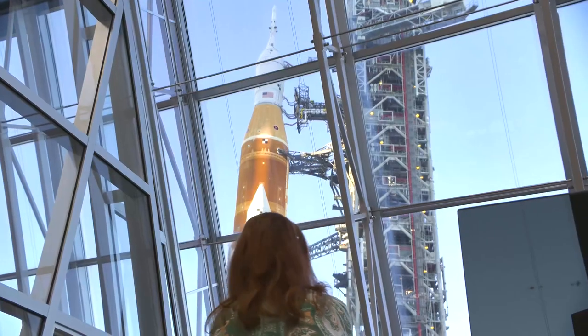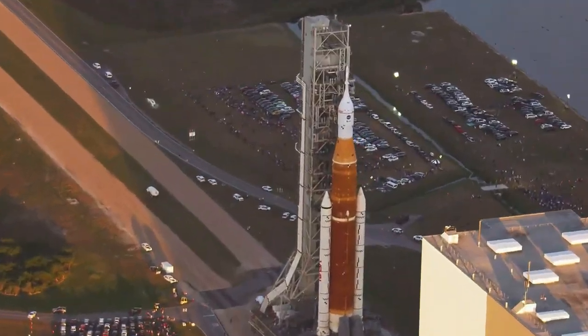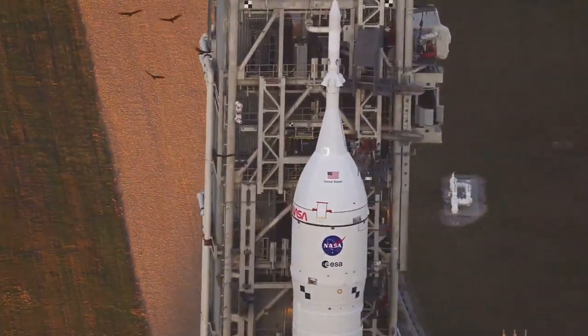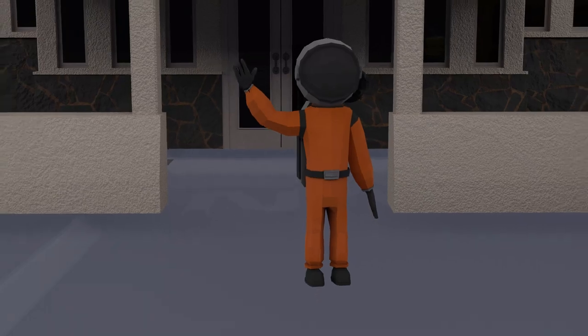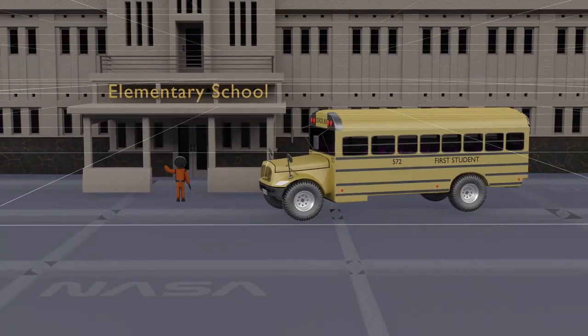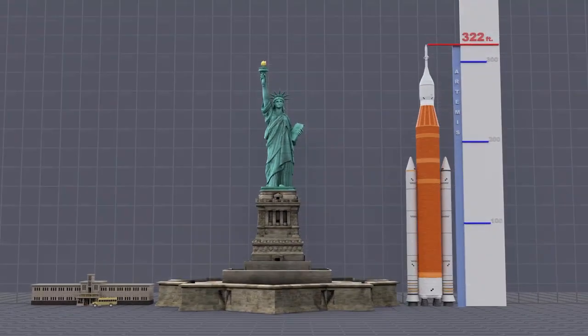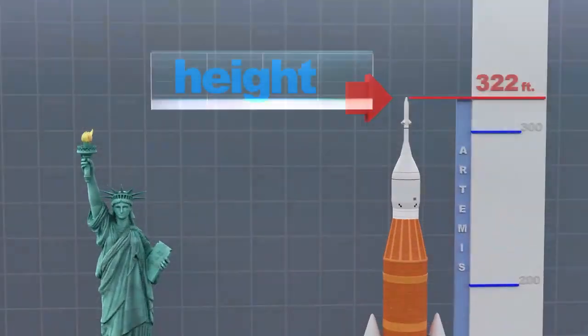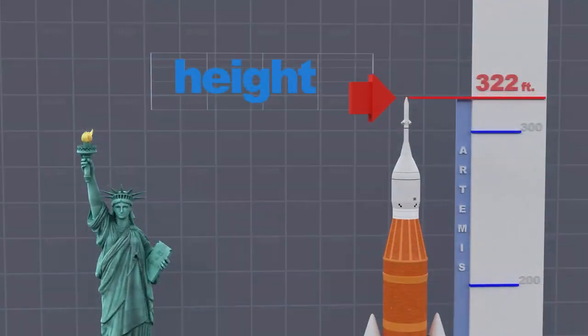The space launch system built for Artemis 1 is the most powerful rocket in the world. Just how big is it? The Artemis rocket system reaches a height of 322 feet. That's taller than the Statue of Liberty.